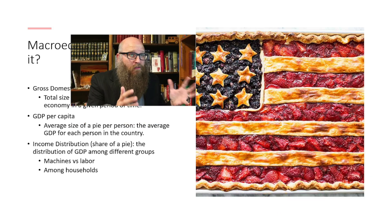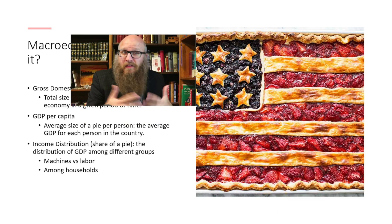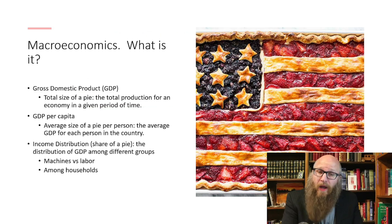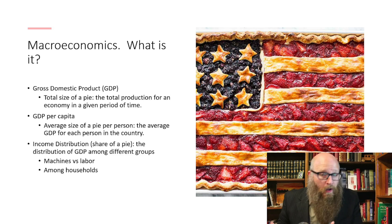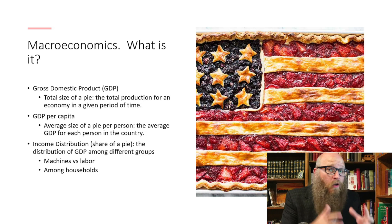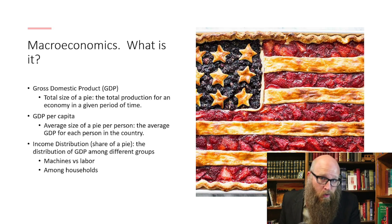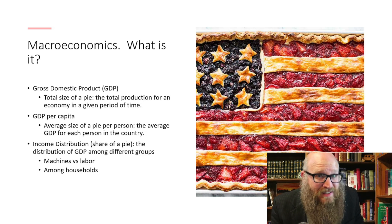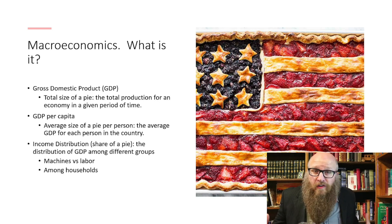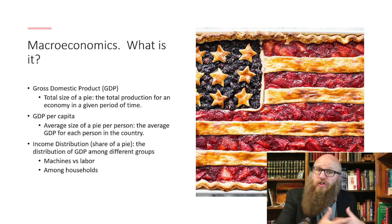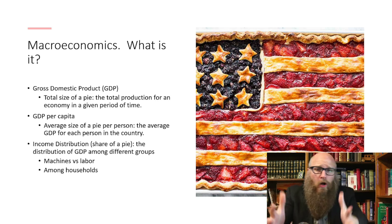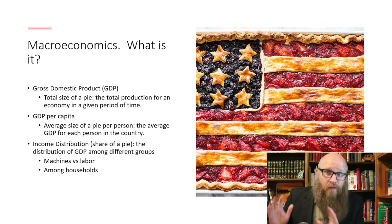But just because you have a big pie doesn't mean everybody inside is getting a good slice. We also care about GDP per capita — how much economic activity there is per person. A country like India or China, which have very large economies, are also not as rich at the individual level. And not everybody gets the same size slice from the economy, so we're going to study income distribution: how large is the gap between the rich and the poor, how large is the middle class, and how much income do machines get versus labor?